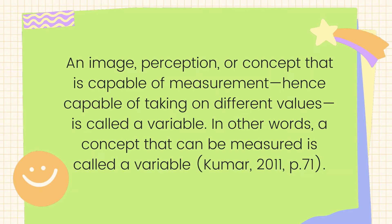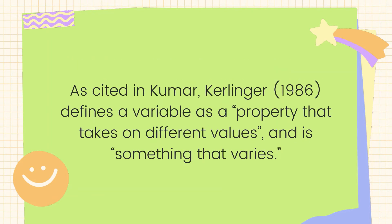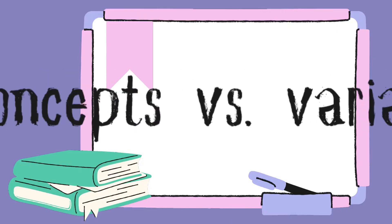An image, perception, or concept that is capable of measurement, hence capable of taking on different values, is called a variable. In other words, a concept that can be measured is called a variable. Also, as cited in Kumar, Kerlinger in 1986 defines a variable as a property that takes on different values and is something that varies. So hence, variables vary.